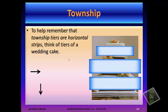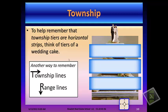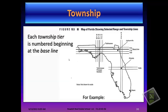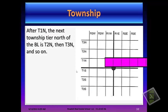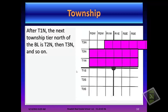To help you remember township tiers are horizontal strips, think of the tiers of a wedding cake. Another way to remember would be using a T with an arrow for township lines, and using the back of the R as range lines — so township and range lines. Each township tier is numbered beginning at the baseline. The first horizontal east and west strip of land north of the baseline is numbered township 1 north, or T1N. The township line numbers increase by 1 moving further away from the baseline. After T1 north, the next township tier north of the baseline is T2 north, then T3 north, and so on.